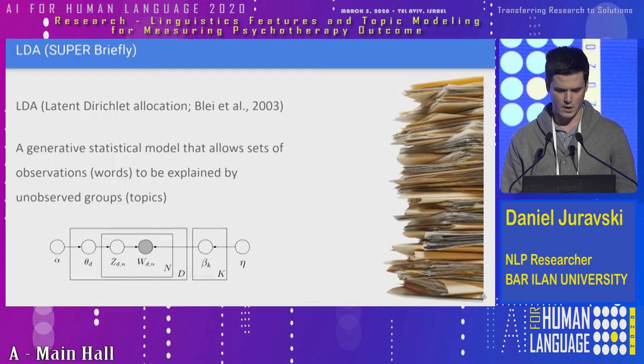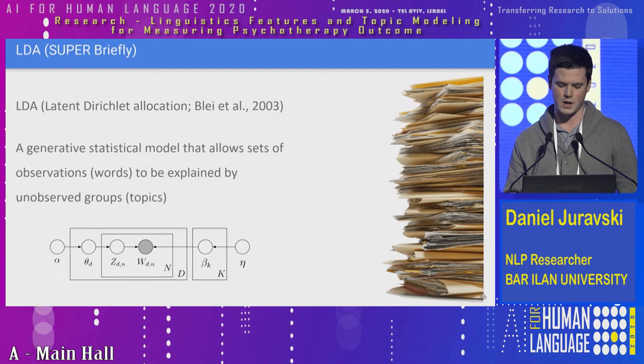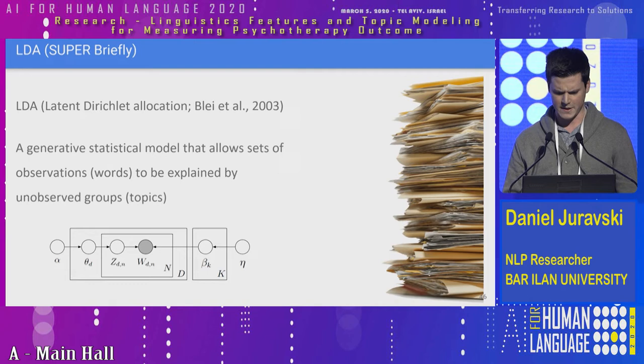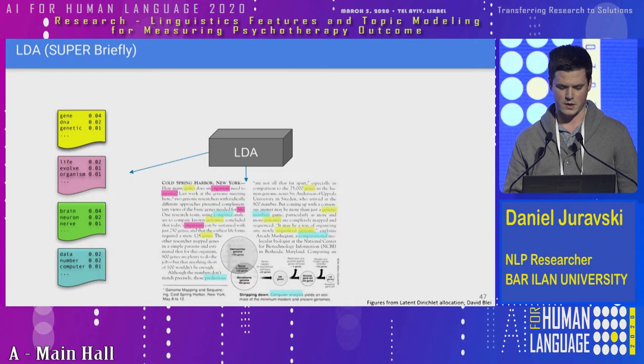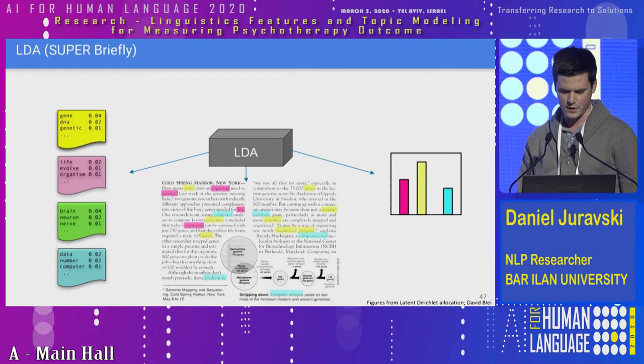The LDA model is a generative statistical model. Its basic assumption is that a document is composed of a small number of topics, where every topic is a distribution over the vocabulary, and each word in the document is based on one of those topics. The LDA model supplies three outputs: first, the list of topics; second, a linkage of every word in the document to the topic it was sampled from; and third, a distribution vector of topics that the document is composed of. The input, of course, is the documents.